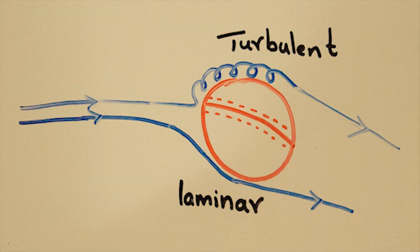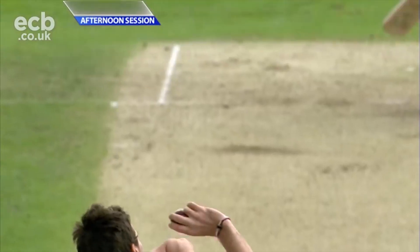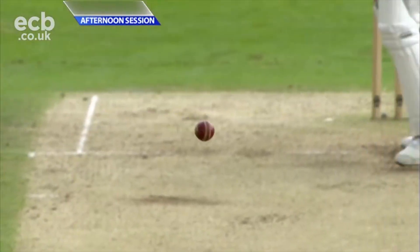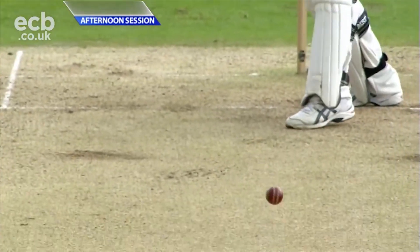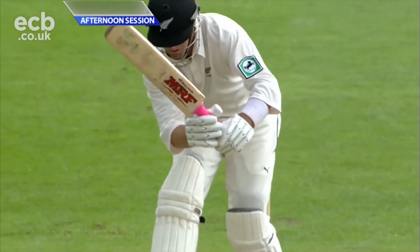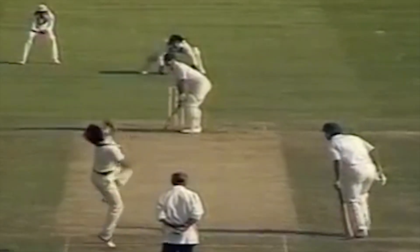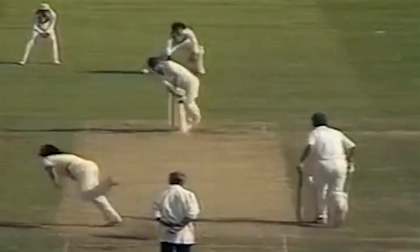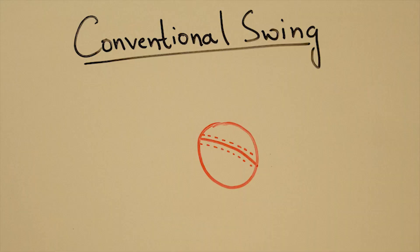There are two main types of swing: conventional swing — like Jimmy Anderson, who bowls both the in-swing and out-swing — and reverse swing, like Imran Khan. Conventional swing occurs with a new ball, and to get it you have to point the seam in the direction you want the ball to swing. Let's consider the oncoming flow towards the ball: as the flow goes over the smooth surface, the boundary layer stays laminar.